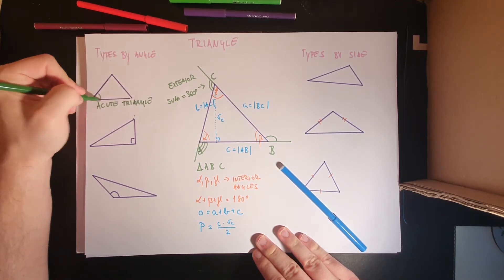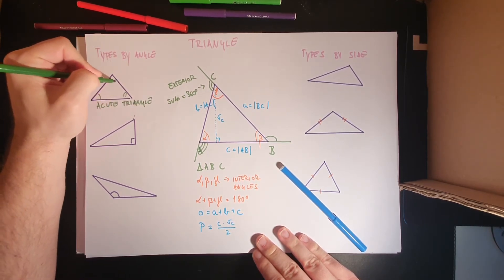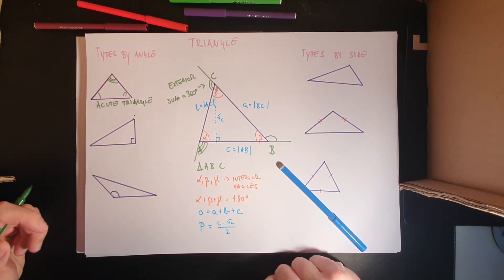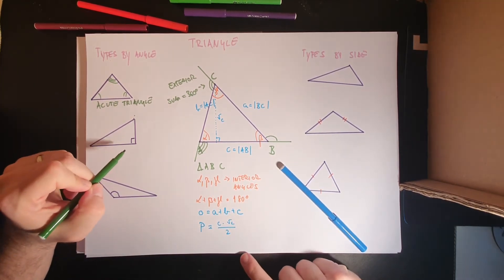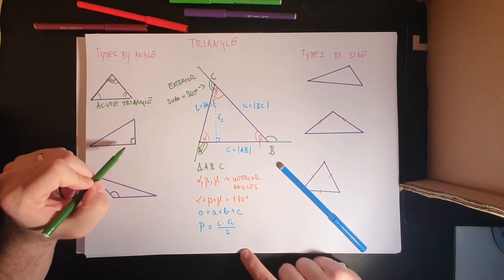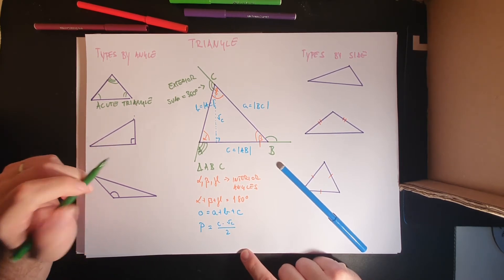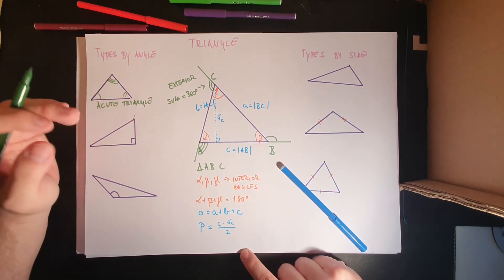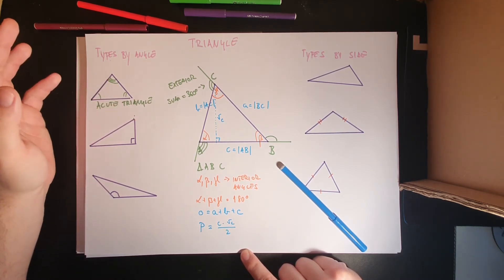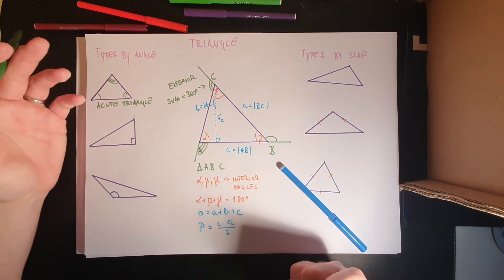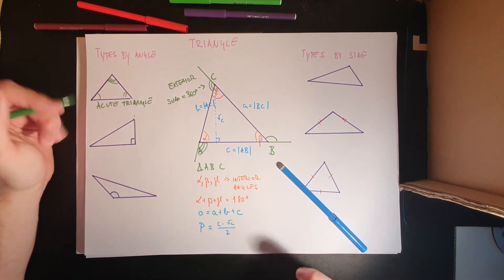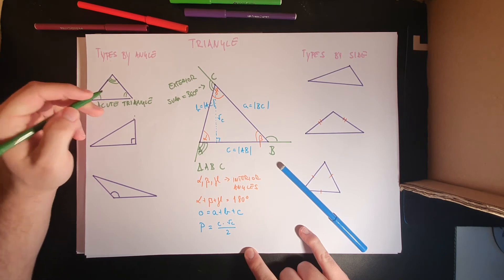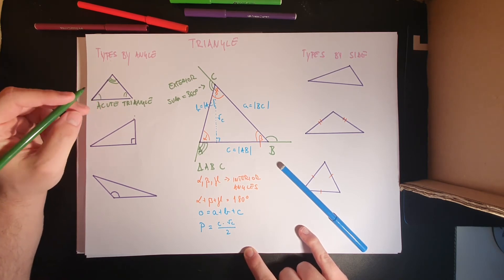The second type has one right angle. In a triangle there can be only one right angle, and the other two must be acute. This is called a right angle triangle.